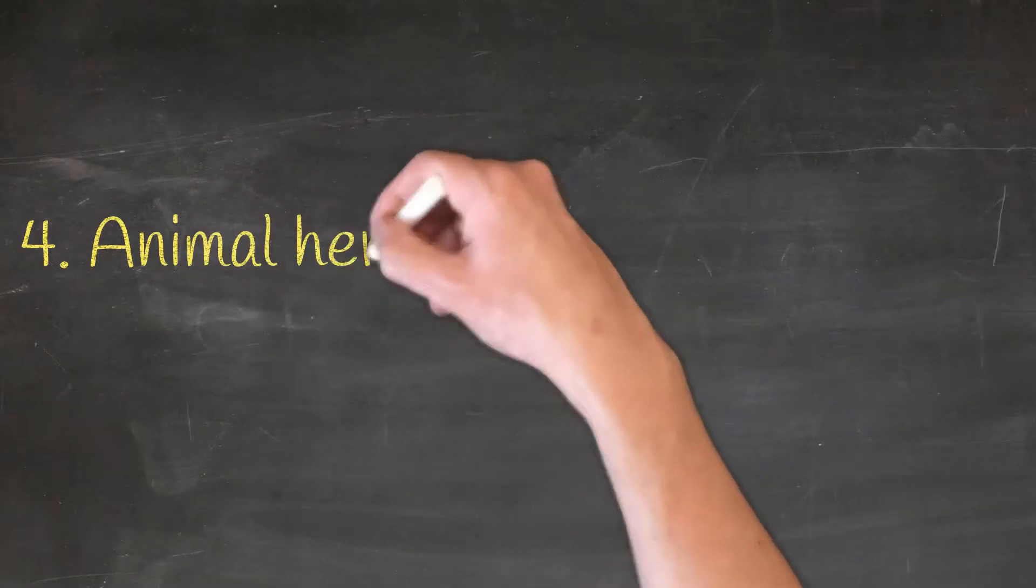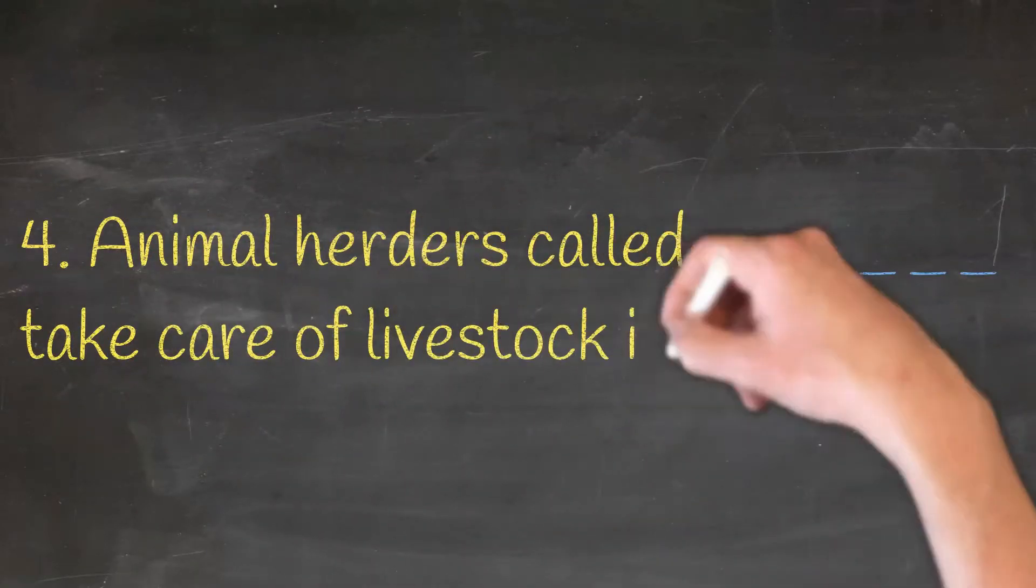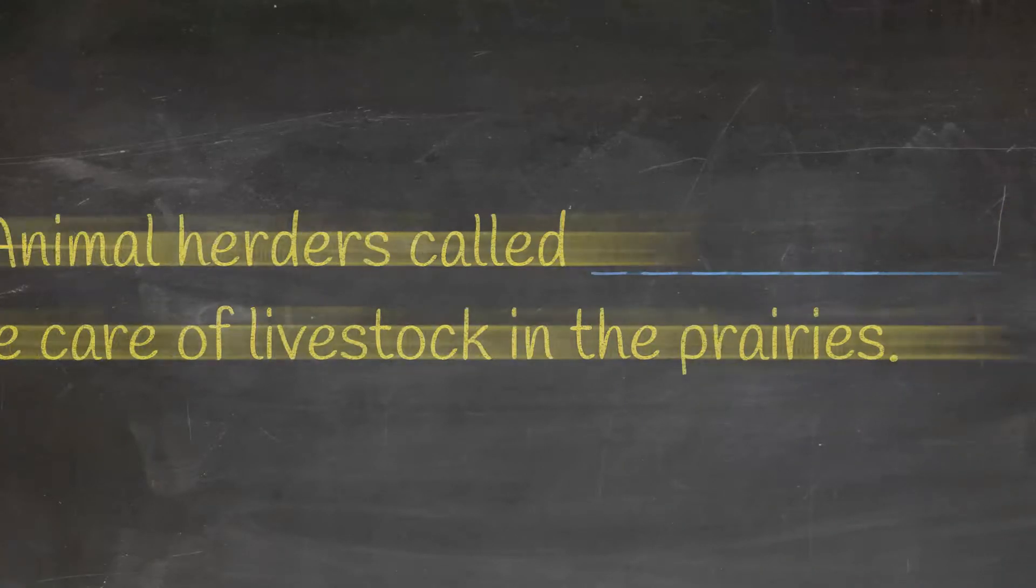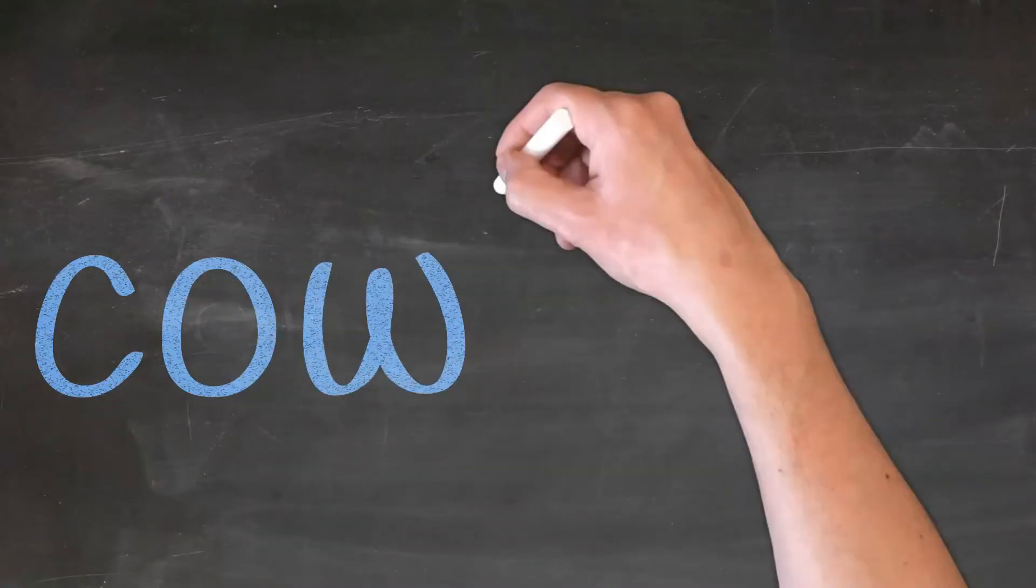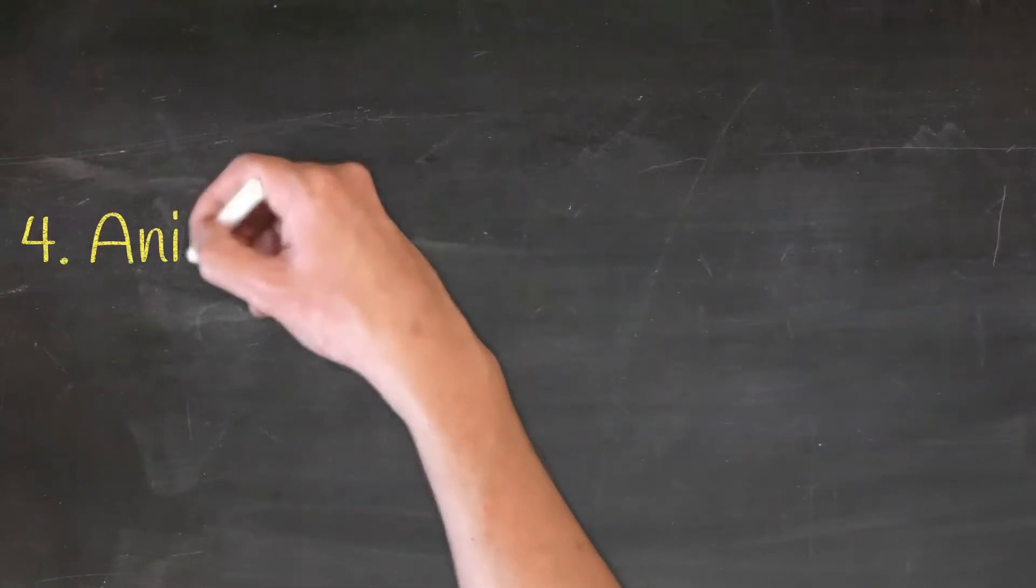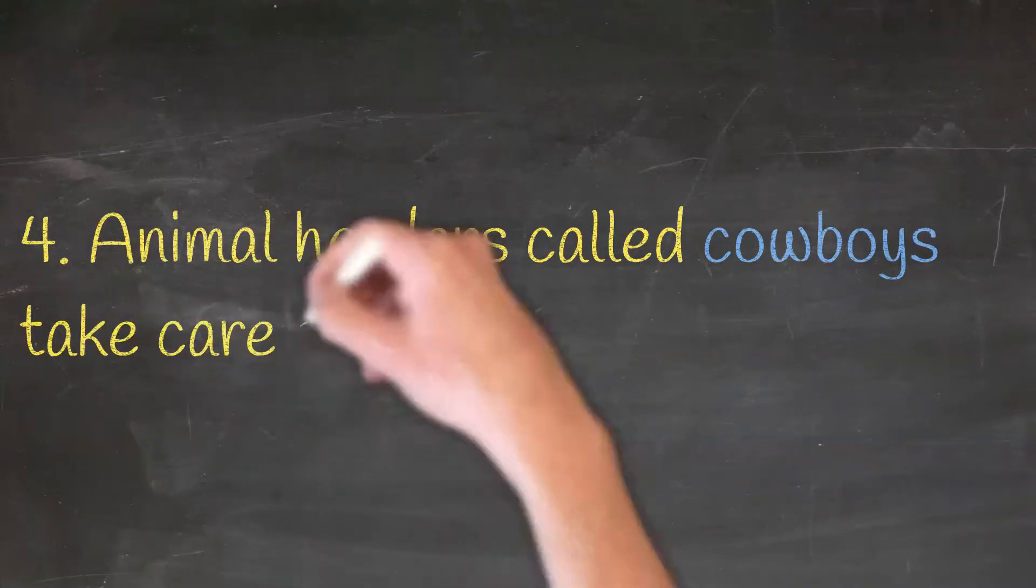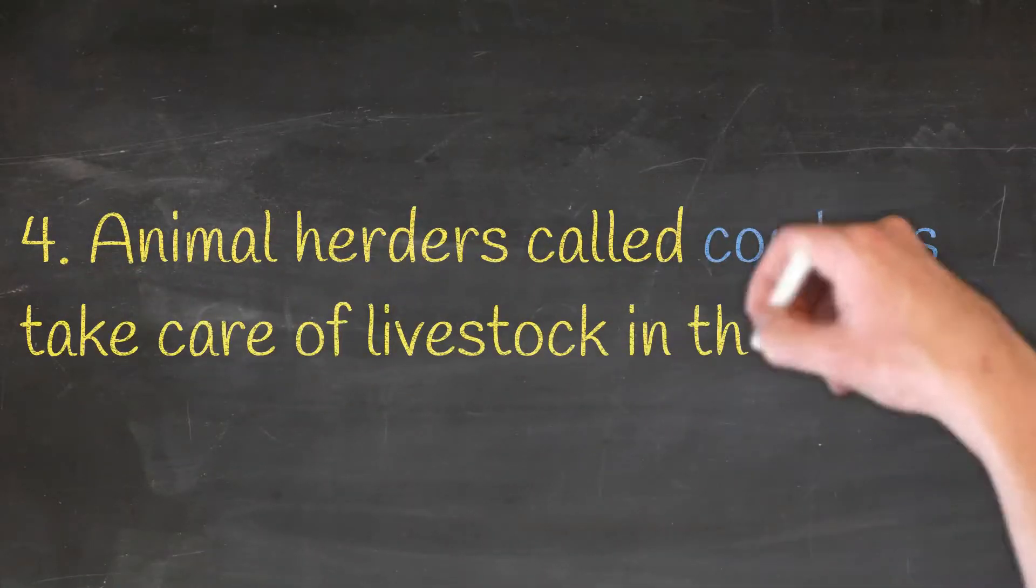Animal herders called dash take care of livestock in the prairies. Cowboys. Animal herders called cowboys take care of livestock in the prairies.